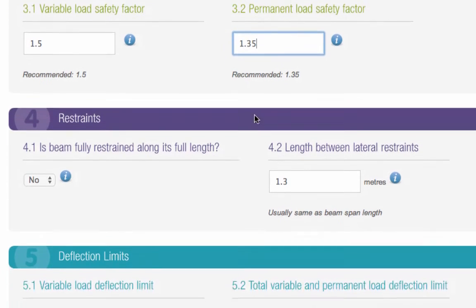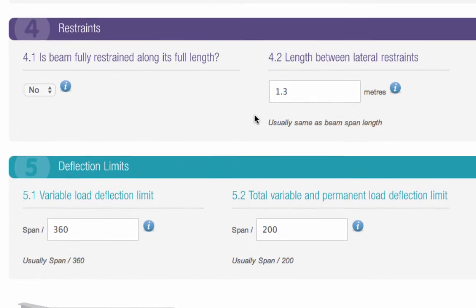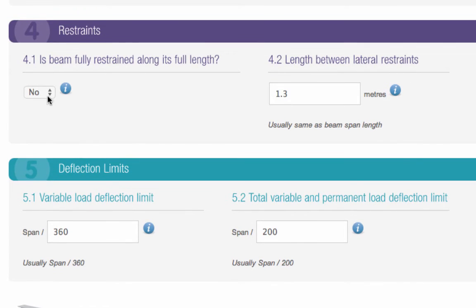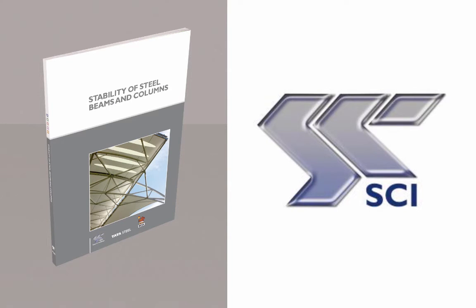The fourth section of the calculator is about how your beam will be restrained. You need to know if the beam is going to be fully restrained along its length. Usually the answer is no. It is only classed as fully restrained if it meets the requirements in the SCI publication P360. For example, if the beam is cast into a concrete floor.